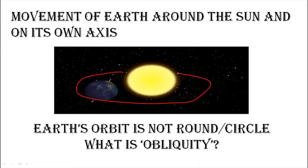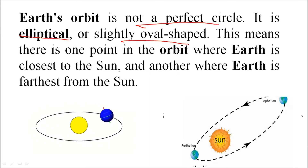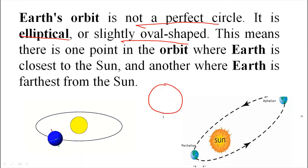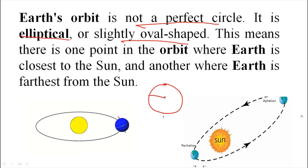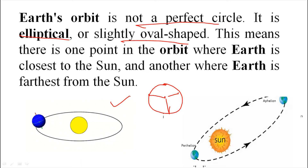Earth's orbit is not a perfect circle — it is elliptical, or slightly oval-shaped. If it were a perfect circle, the distance from the sun to the Earth would always remain equal. But because the orbit is elliptical, there is one point in the orbit when Earth is closest to the sun, and another point when Earth is farthest from the sun.